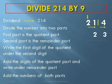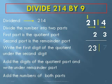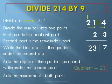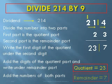Now add the numbers of both parts: 23 and 7. Therefore, the quotient is equal to 23 and the remainder is equal to 7. This ends the division process by the Nikola method.